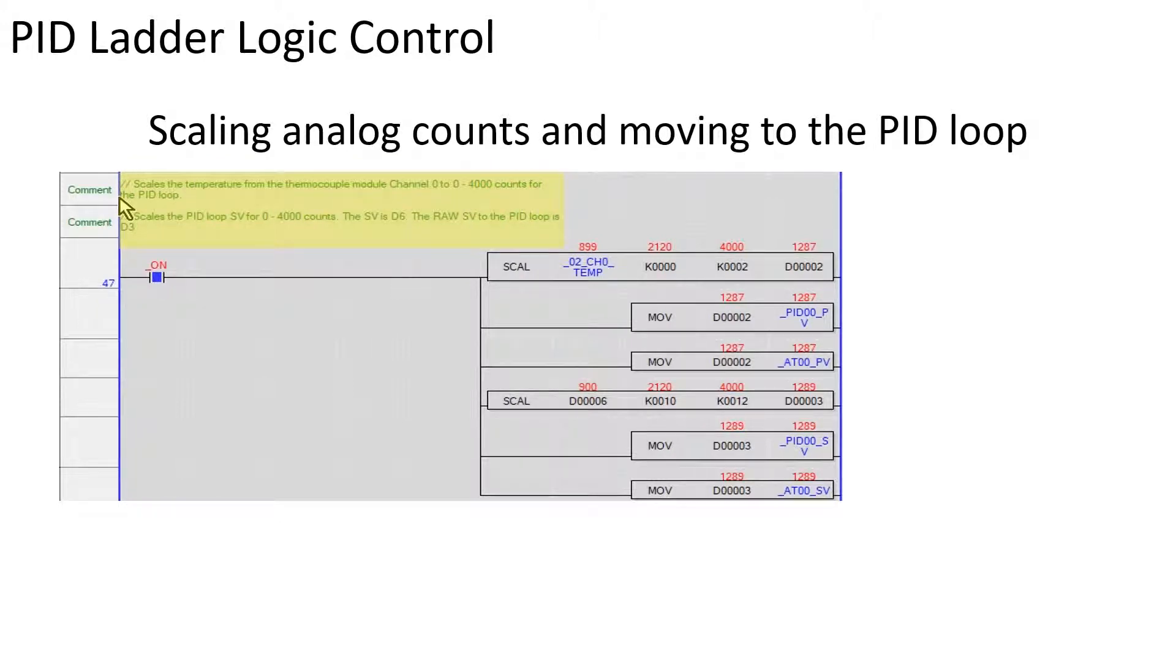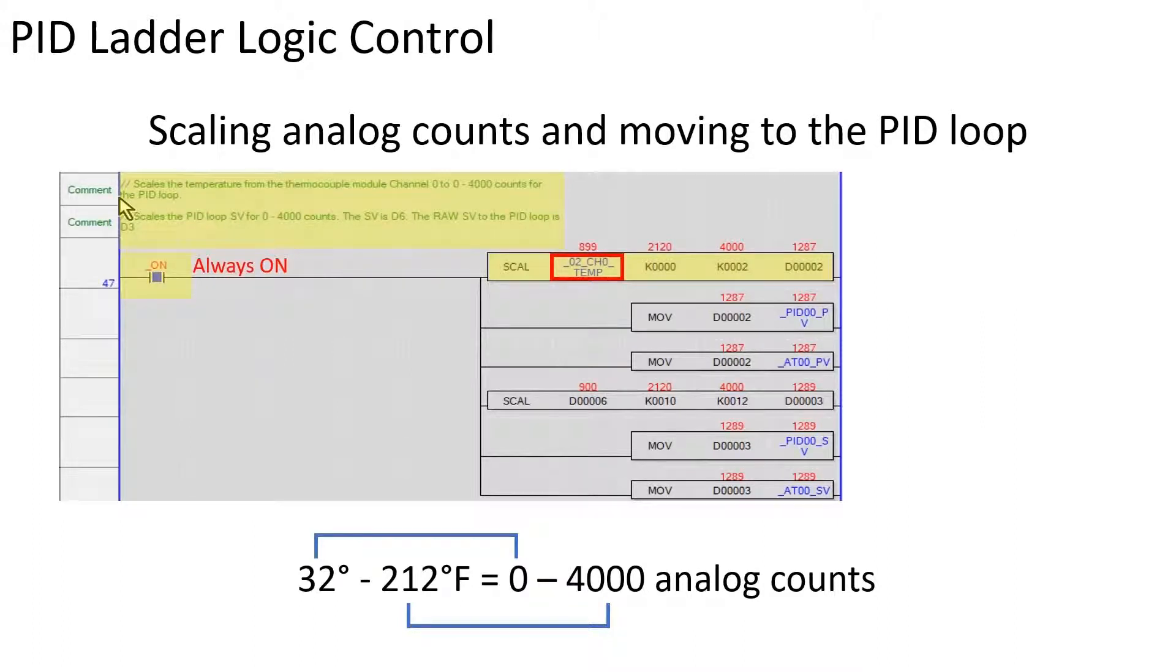In ladder rung 47, the PV and SV data in temperature units are scaled to analog counts. The PID loop uses analog counts correlating to the analog range of the MV output. The SCAL instruction shown is being monitored in an operating program. The thermocouple value of 89.9 degrees is scaled to a value of 1287 as shown. This scaled value is stored in memory location D2.